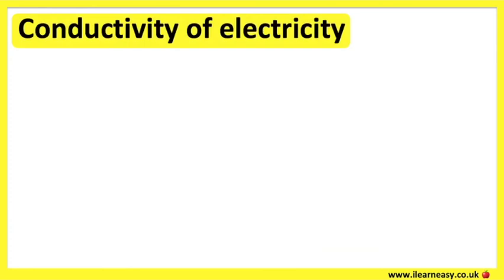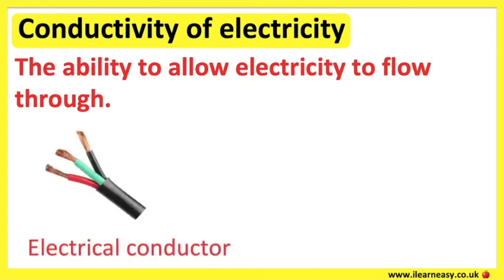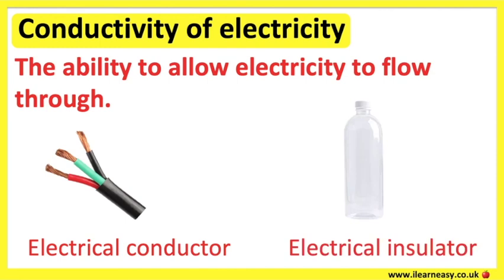Conductivity of electricity refers to the ability to allow electricity to flow through. Some materials allow electricity to flow through and some don't. Electrical conductors allow electricity to flow through them and are usually used when electricity needs to be transported from one place to another — for example, copper wires. Electrical insulators prevent the flow of electricity through them — for example, plastic.